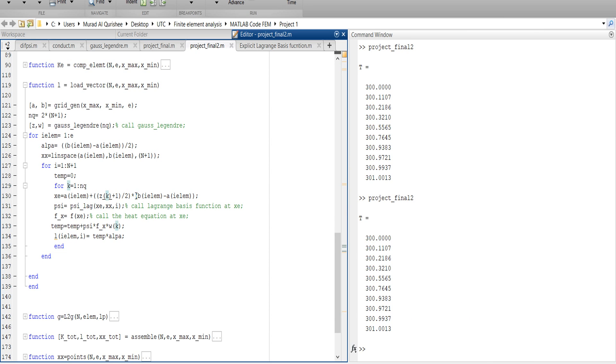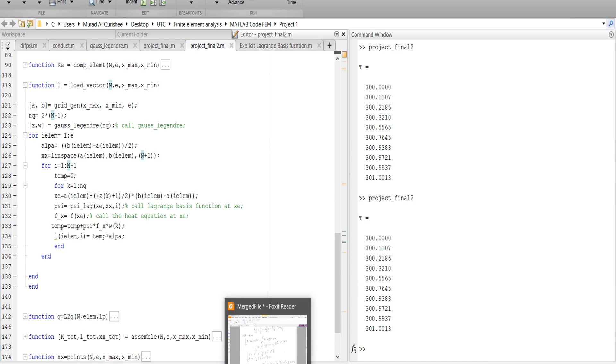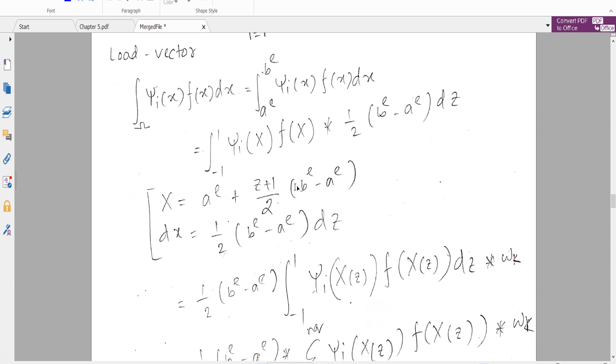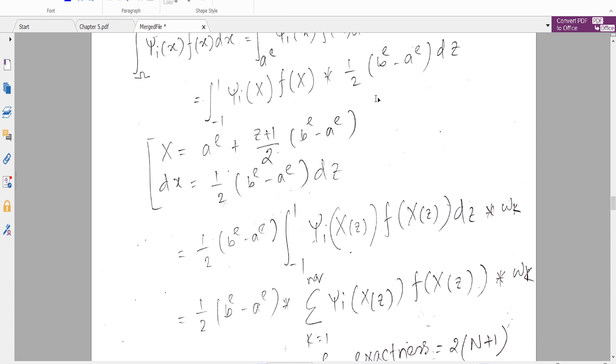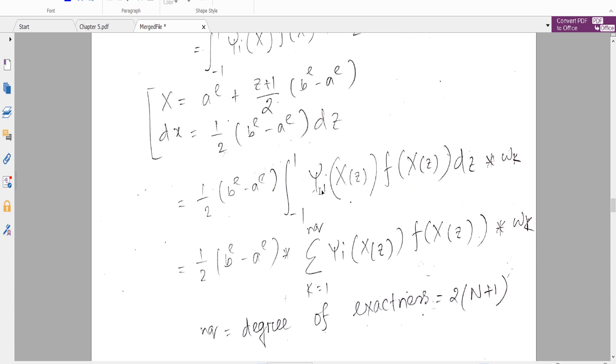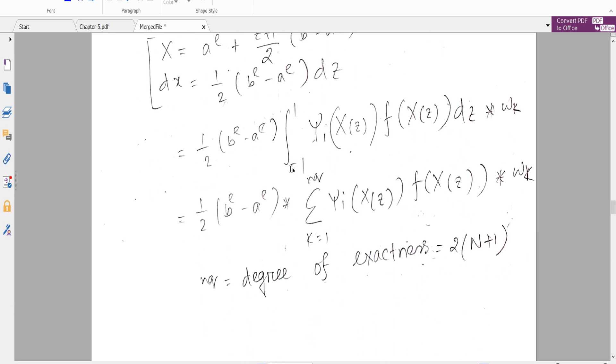In here you see X_e, a remains Z, 1 plus 1, B element and A element. Z comes from the Gauss legendary function, and A element and B element comes from the grid generator. And Q number of exactness, it comes from this formula.